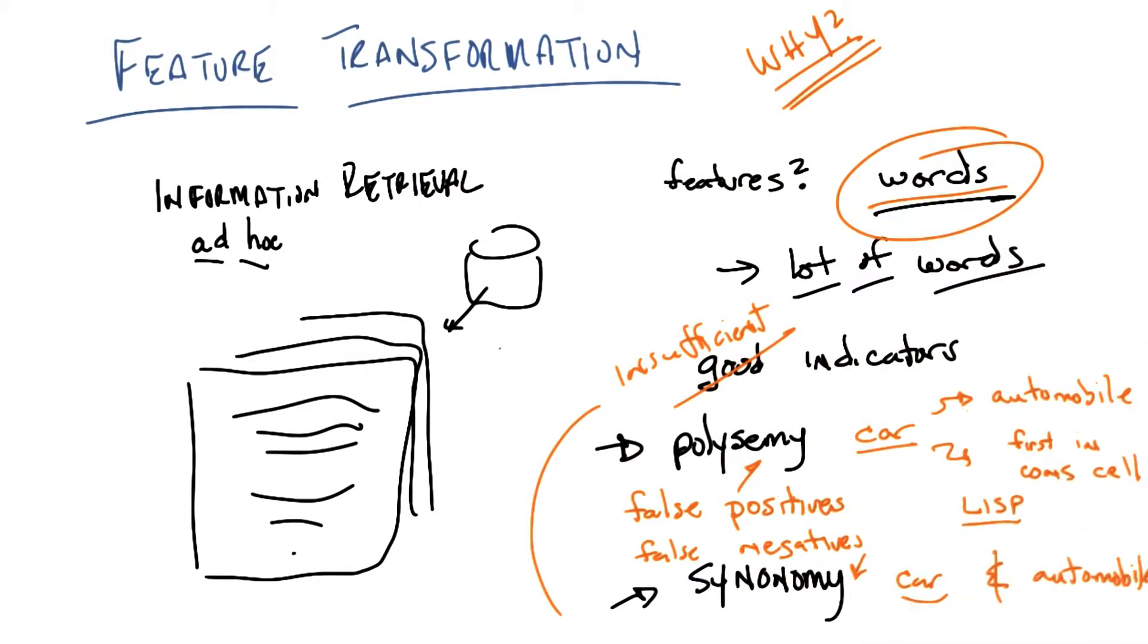Yeah, I could definitely see how synonymy is going to be a win. When we index the documents, if we include, well, if we map them down to a lower dimensional feature space where one feature is used for anything sort of car related. I'm not sure how that's going to help with polysemy, but I definitely see how this feature transformation idea could be a win with synonymy.